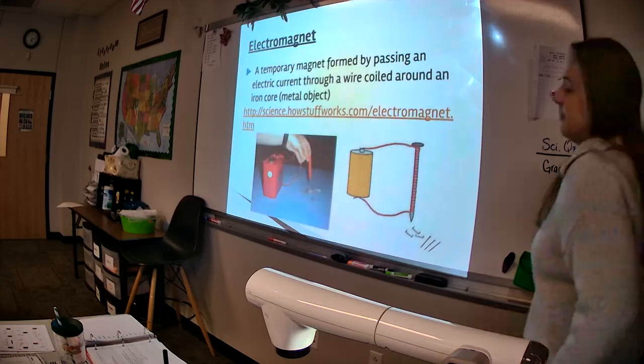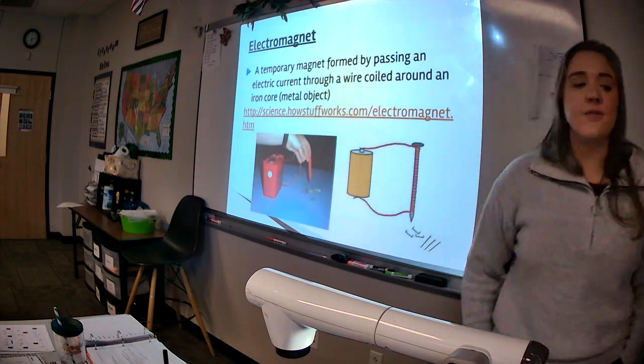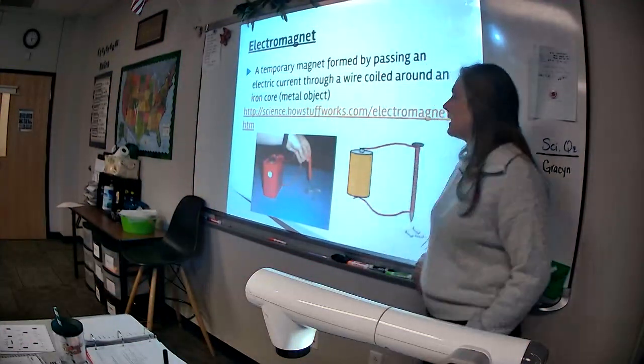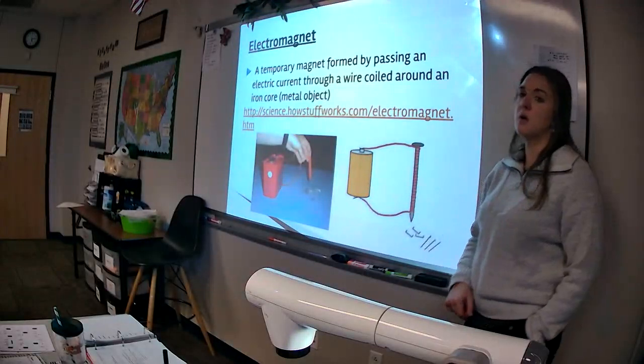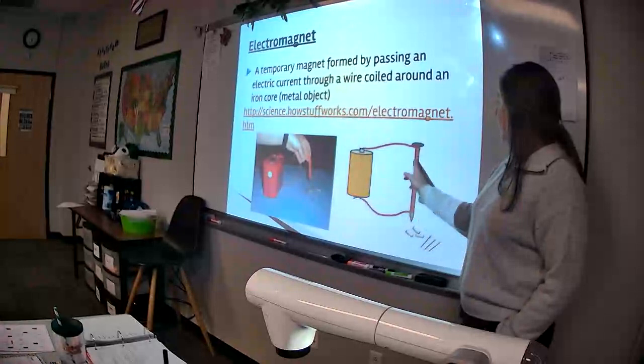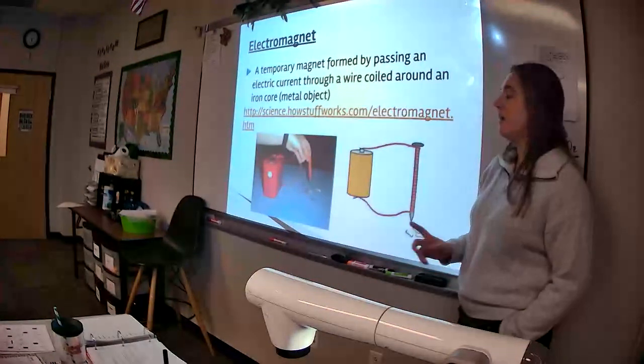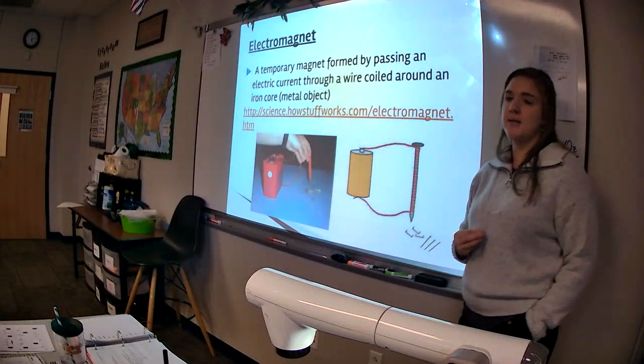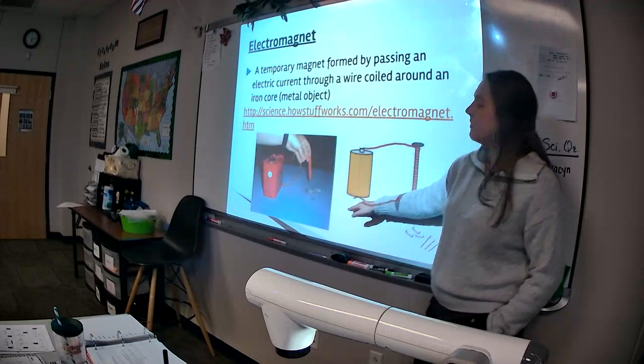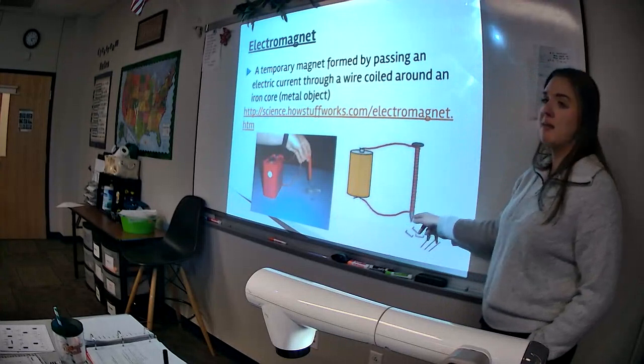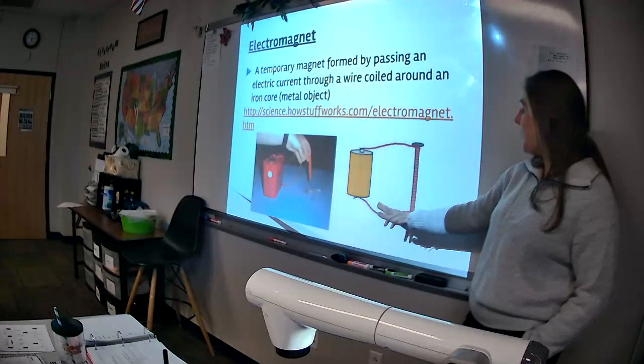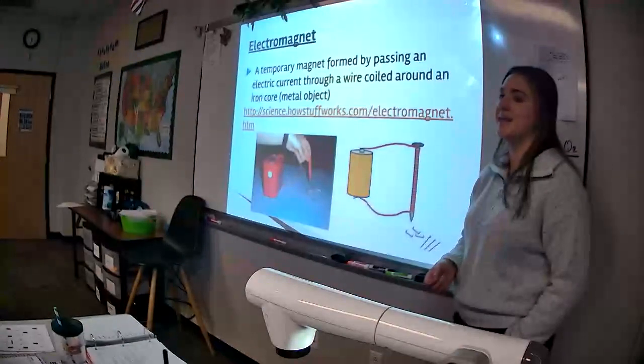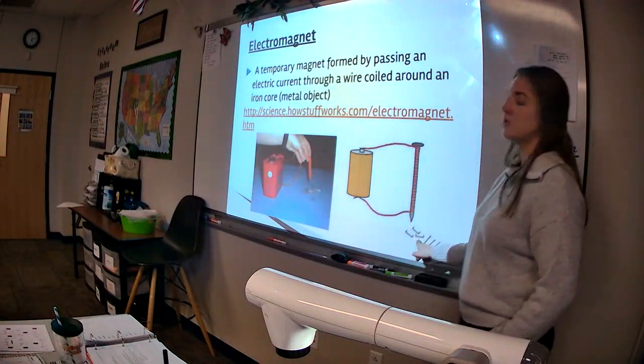Last part here is electromagnet. You can also use electricity to form a magnet. This is how. An electromagnet is a temporary magnet formed by passing an electric current through a wire coiled around an iron core or a metal object. The object would be something like a nail or a screw or a tack. And if you can wrap the electrical wire around it, the wire itself does not make it a magnet. So, let's say I can take this wire and disconnect it from the battery. So there's no electricity flowing. This nail would not be magnetic at that point. It's not going to attract the staples.